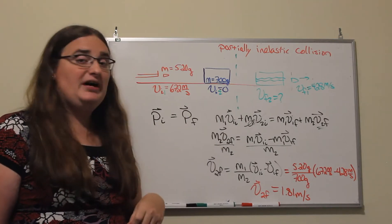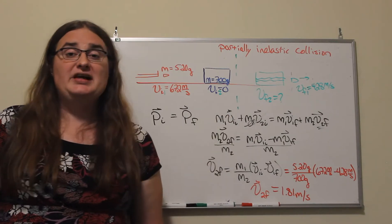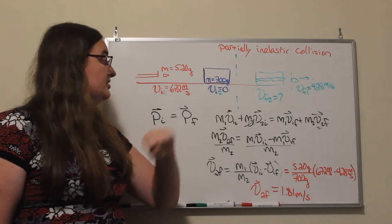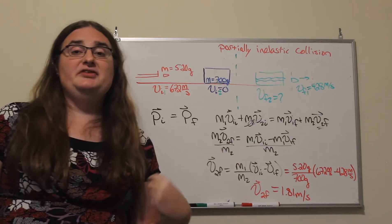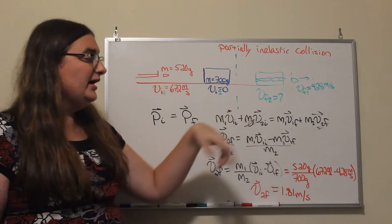Our initial momentum is the mass of object one, which is the projectile, times the initial velocity of the projectile, plus the mass of object two times the initial velocity of object two. Well, since object two starts at rest, that term is just zero.